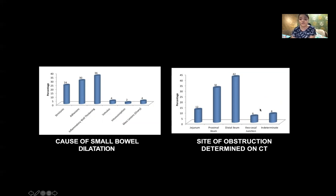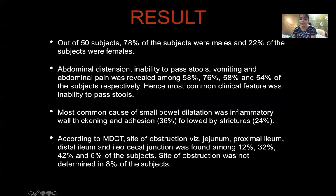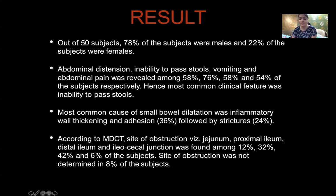The site of obstruction determined on CT showed the most common location was the distal ileum, followed by proximal ileum, jejunum, and ileocecal junction, with some indeterminate sites. Out of 50 subjects, 78% were males and 22% females. Abdominal distension, inability to pass stool, vomiting, and abdominal pain were found in 58%, 76%, 58%, and 54% of subjects respectively, making inability to pass stool the most common clinical feature. According to MDCT, obstruction sites were jejunal, proximal ileum, distal ileum, and IC junction in 12%, 32%, 42%, and 6% of subjects respectively, with obstruction site not determined in 8% of subjects.